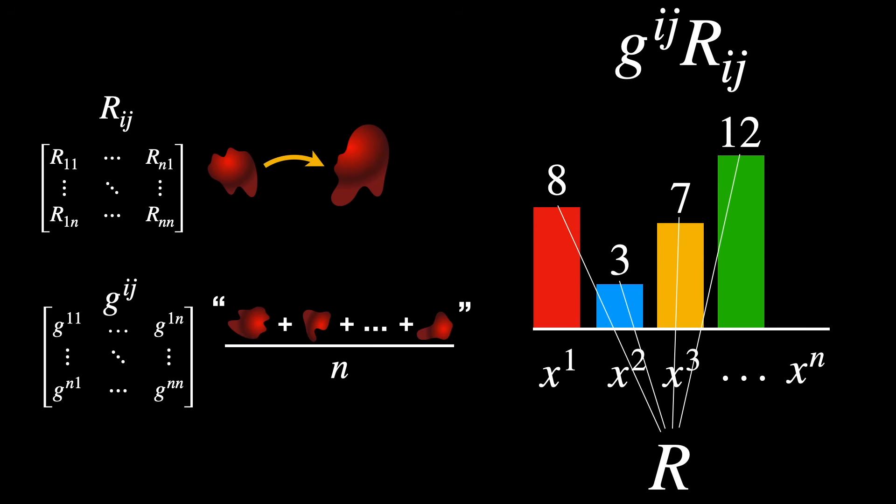And this is the scalar curvature R. This quantity, the scalar curvature R, answers the following question: At a specific point on the manifold, is the curvature on average positive, negative, or zero around its neighborhood?